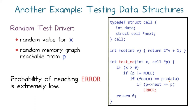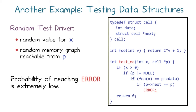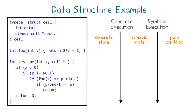The probability that even the third condition, foo of x equals p.data, is true is extremely small — in fact, 0 if p.data is even. So it's highly unlikely that the error would be caught by a random tester. Dynamic symbolic execution, on the other hand, would find this error after at most 5 runs of the testme function.